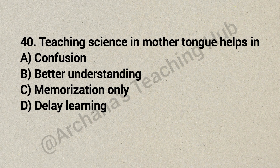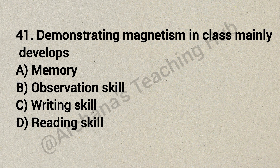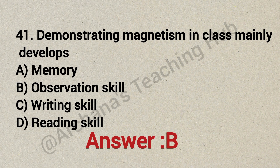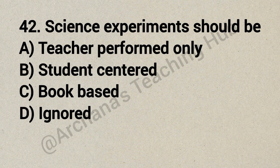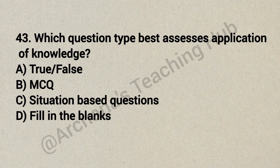Question 40: Teaching science in the mother tongue helps in — Option A: confusion, Option B: better understanding, Option C: memorization only, Option D: delayed learning. Correct answer is Option B: better understanding. Question 41: Demonstrating magnetism in class mainly develops — Option A: memory, Option B: observation skill, Option C: writing skill, Option D: reading skill. Correct answer is Option B: observation skill. Question 42: Science experiments should be — Option A: teacher-performed only, Option B: student-centered, Option C: book-based, Option D: ignored. Correct answer is Option B: student-centered. Question 43: Which question type best assesses application of knowledge? Option A: true/false, Option B: MCQ, Option C: situation-based questions, Option D: fill in the blanks. Correct answer is Option C: situation-based questions.